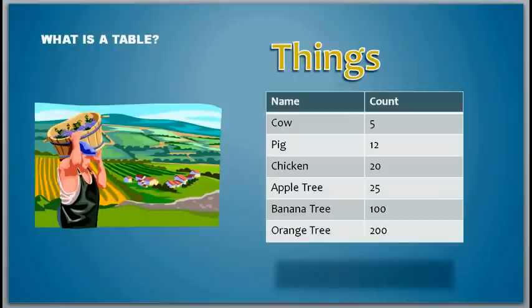One is, he can take a piece of paper and name it things. And there, he lists what he has. He has 5 cows, 12 pigs, 20 chickens.